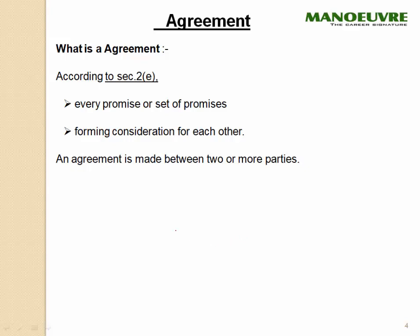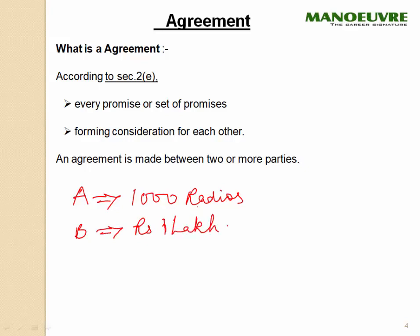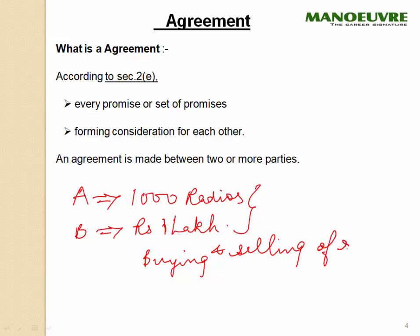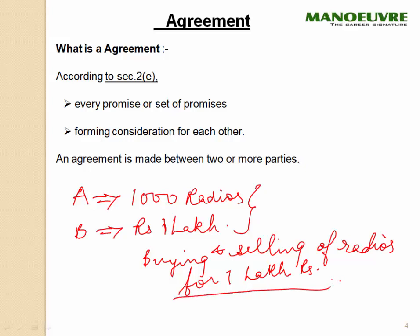Now, what is an agreement? An agreement is a promise or every set of promises forming consideration for each other. For example, A tells B 'I will sell you 1,000 pieces of radios,' and B says 'OK, I will buy them for Rs. 1 lakh.' So there is a set of promises — of buying and selling radios for consideration of one lakh rupees. It is an agreement between the two parties; they mutually agree to do it.